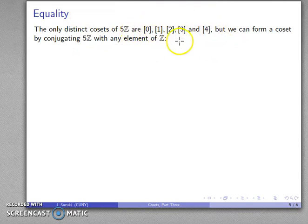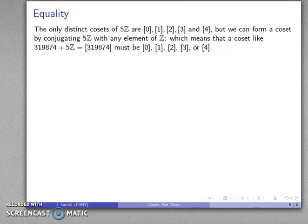Well, we're not quite there yet. The problem is that we claim that the only distinct cosets are these, but we can form a coset by adding any element we want to to 5Z. So I could talk about a coset like 319874 plus 5Z, that's going to be this coset, and it's got to be one of these because all of our elements of Z ended up in one of